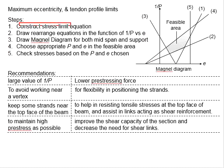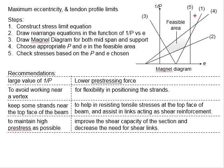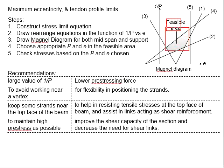First, you need to derive the stress limit equations. Rearrange the equations in the functions of 1/P versus e. Then draw the straight line for each of the equations. There will be one additional straight line which defines the maximum eccentricity possible within the section. Based on the visible regions proposed by each boundary condition, the visible areas which fulfill all the requirements are identified. For a simply supported beam, you may draw the Magno diagram for both mid span and the support.